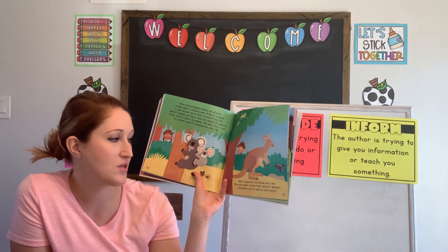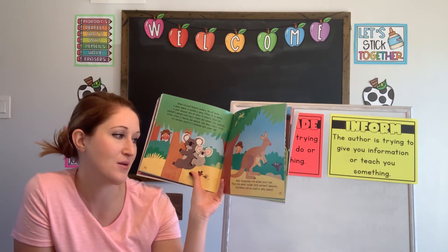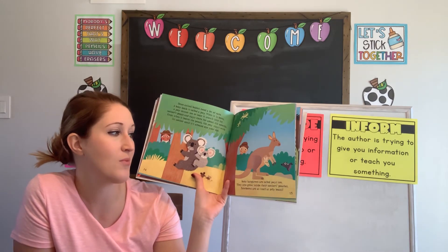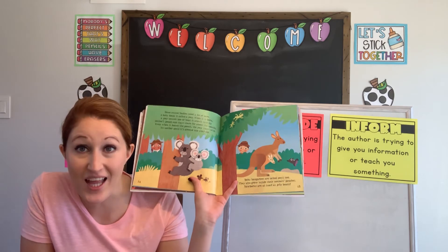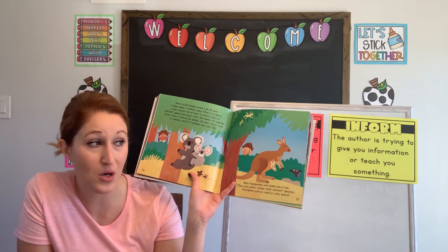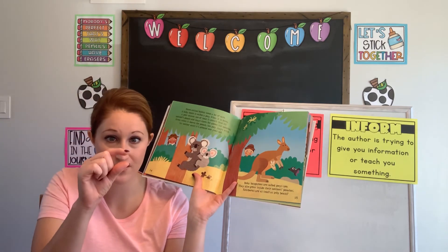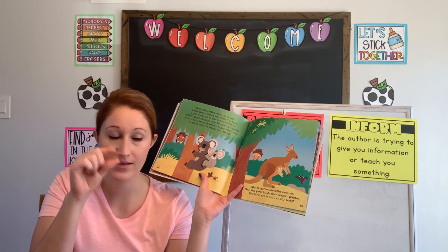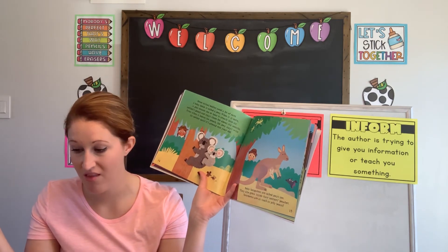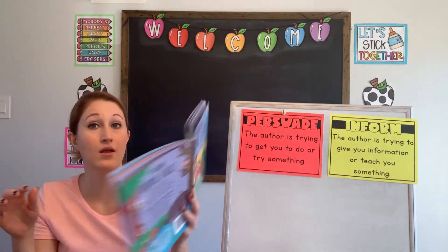Baby kangaroos are called joeys too. They also grow inside their mother's pouches. Newborns are as small as jelly beans — that's so small! Think about a little jelly bean. And some kangaroos grow up to be even as tall as people. That's a lot of growing.